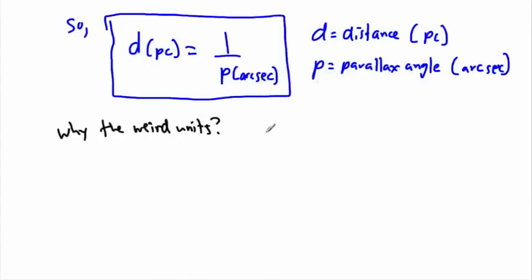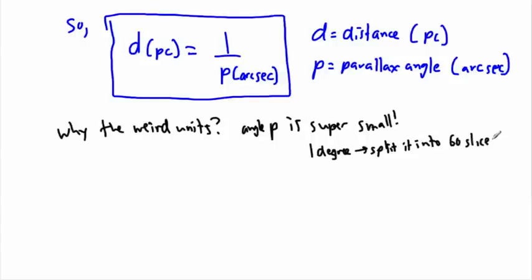Well actually they're kind of handy here. First of all, angle P is super small. How small? Well if you take one degree and you split it, because it's actually way smaller than one degree. If you imagine going all the way around in a circle, you split that up into 360 equal slices, that's one degree. So you take your one degree which seems really small, but it turns out parallax angles for stars are way smaller than that. So you split it into 60 slices, and those are called arc minutes.